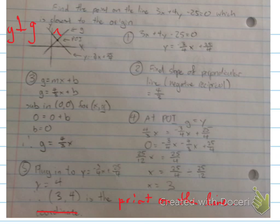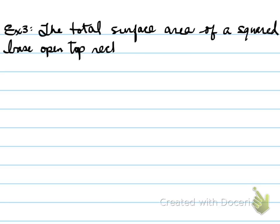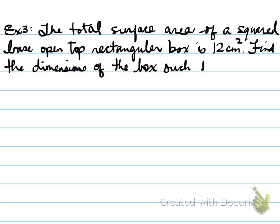Oh, that's a lot of work there. We'll go through it slowly. Example number 3. The total surface area of a square base, open top, rectangular box is 12 centimeters squared. Find the dimensions of the box such that the volume is a maximum. What does that mean? What are we looking for? Again, it is the total surface area of a square base, open rectangular box is 12 centimeters squared. Surface area, folks, is like you were to take the box and open it completely out so that it's flat. Find the dimensions of the box such that the volume is a maximum.